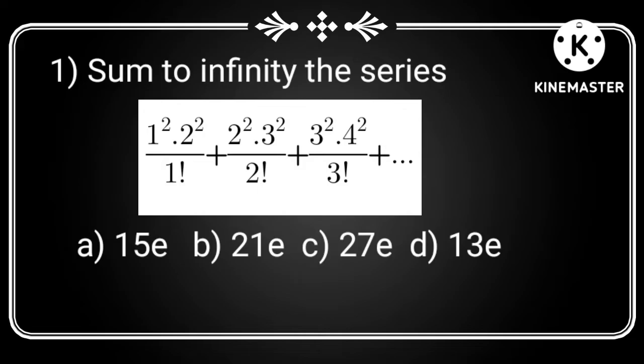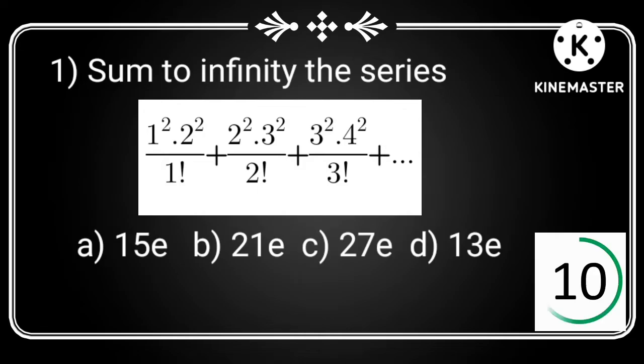Sum to infinity the series: 1 square dot 2 square divided by 1 factorial plus 2 square dot 3 square divided by 2 factorial plus 3 square dot 4 square divided by 3 factorial plus etc. Option a: 15e, option b: 21e, option c: 27e, option d: 13e.